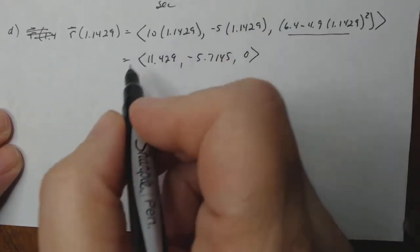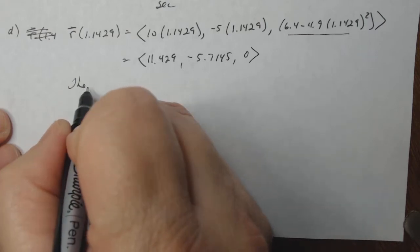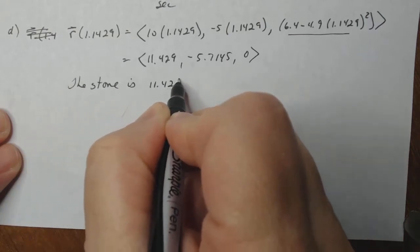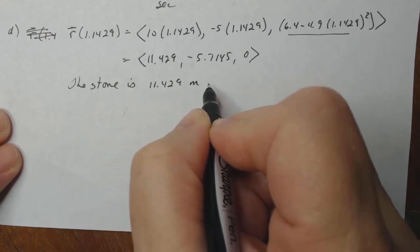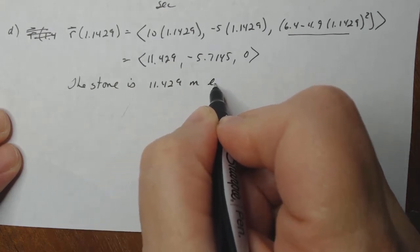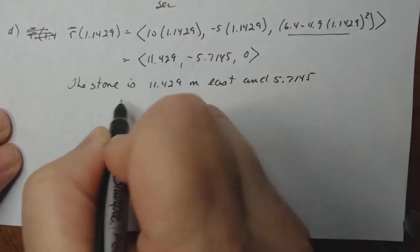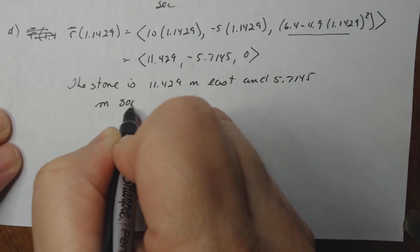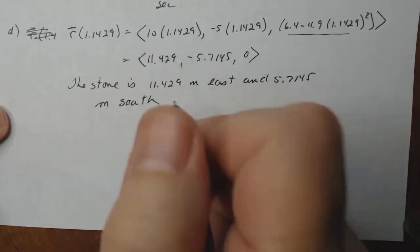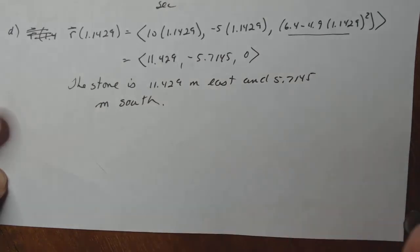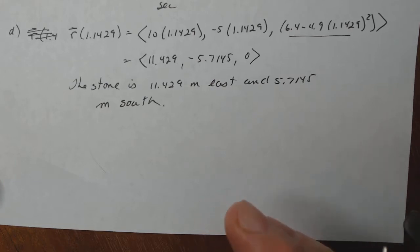So that is the position. So I should be 11.429 meters east, negative 5.7145 meters north of the building. So if I was actually going to write this in a sentence, the stone is 11.429 meters east and 5.7145 meters south. That's what negative north would be, south. And because it's on the ground, we don't need to state that up, or the stone is on the ground. It just is.